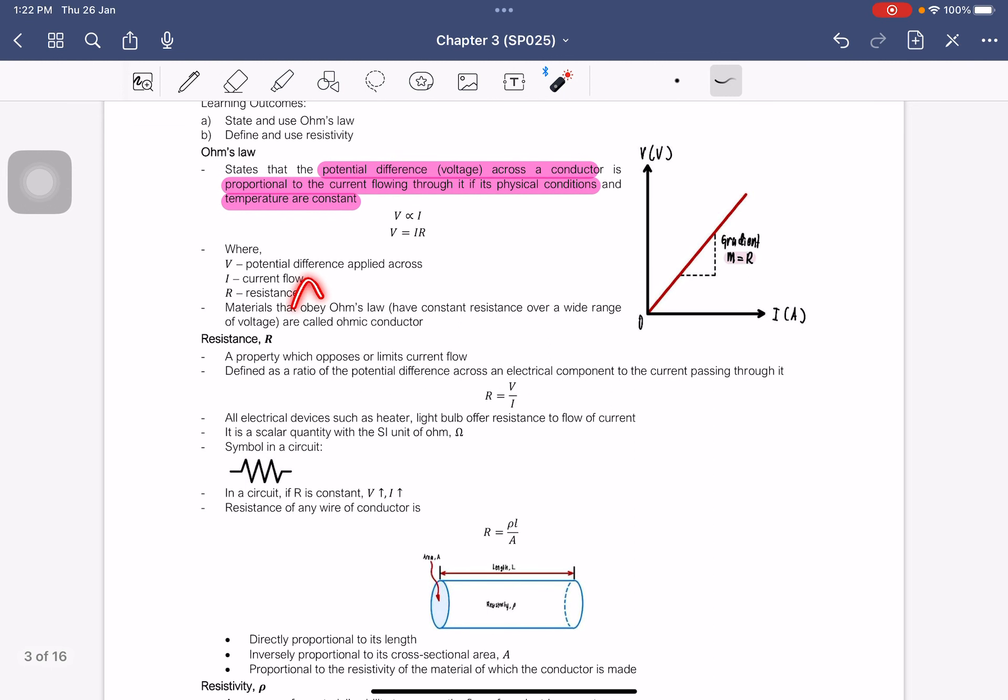So materials that obeys Ohm's law are called ohmic conductors. So if it's not the ohmic conductor, it's the one that doesn't obey Ohm's law. So materials that obeys Ohm's law basically have constant resistance over a wide range of voltage. So across all these values of voltage, the resistance must be constant.